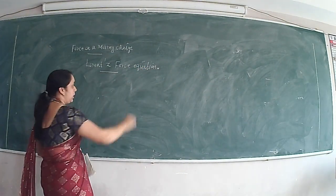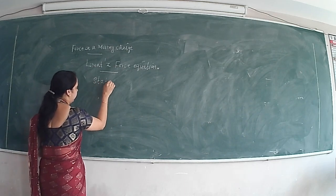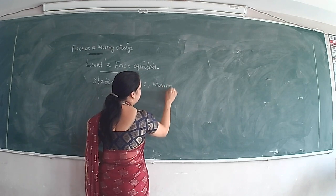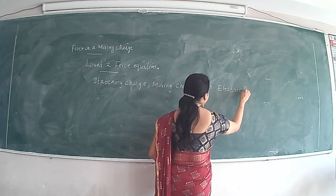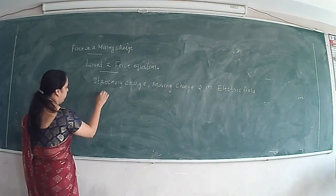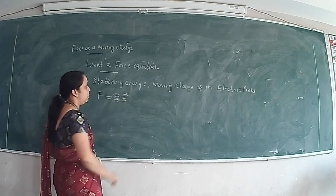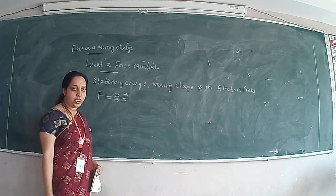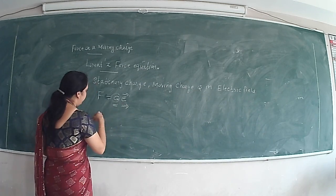To derive the Lorentz force equation, let us first consider a stationary charge or a moving charge Q in an electric field. Whenever we talk about electric field intensity and charge, we use the equation F = QE. That means the charge Q will be accelerated in the direction of E due to the force F.